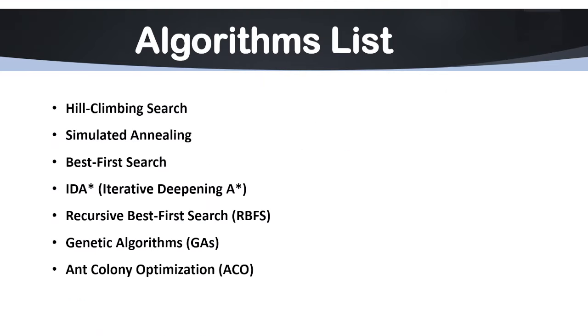The first algorithm is hill climbing search. Hill climbing is a local search algorithm that works iteratively, moving to the best neighboring state to maximize or minimize a goal function. Its variants in artificial intelligence are simple hill climbing, steepest ascent hill climbing, and stochastic hill climbing. All these are very important.